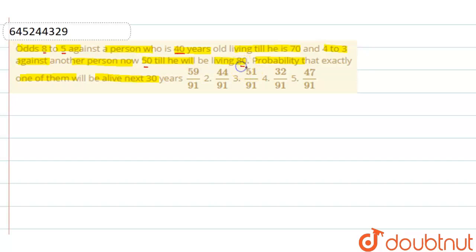That is a difference of 30 years more, and odds are given as 4 to 3. Now we have to tell the probability that at least one will live up to 30 years.